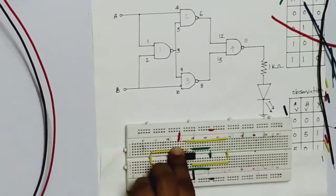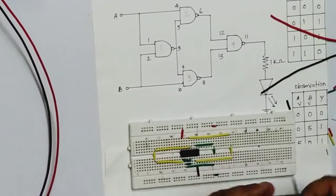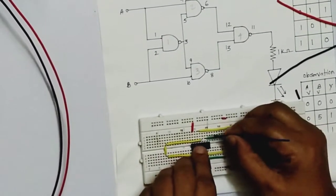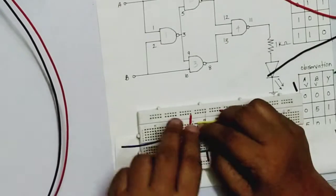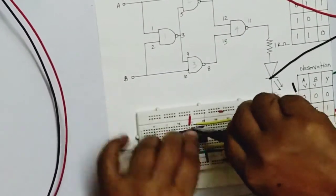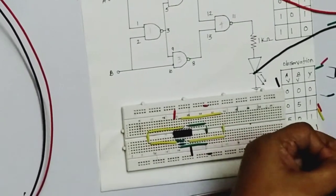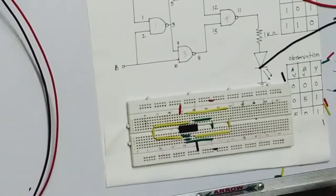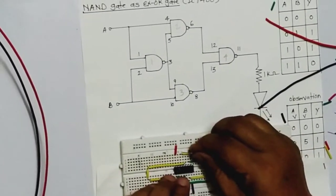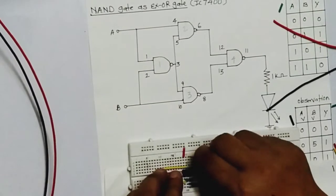Now pin 8 to 13. We are using blue color wire. This is your pin 8 here and 13 is here. Take the measurement properly — this is pin number 8 to 13.